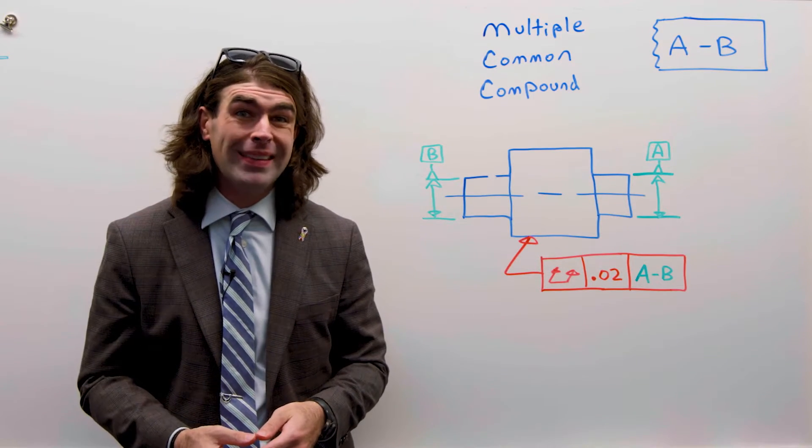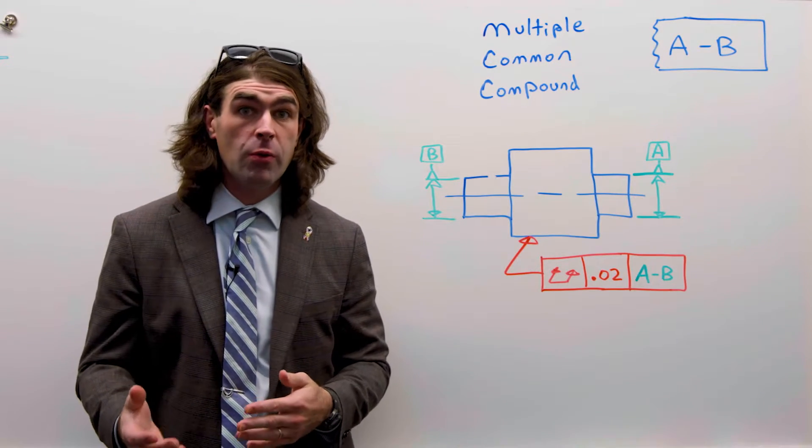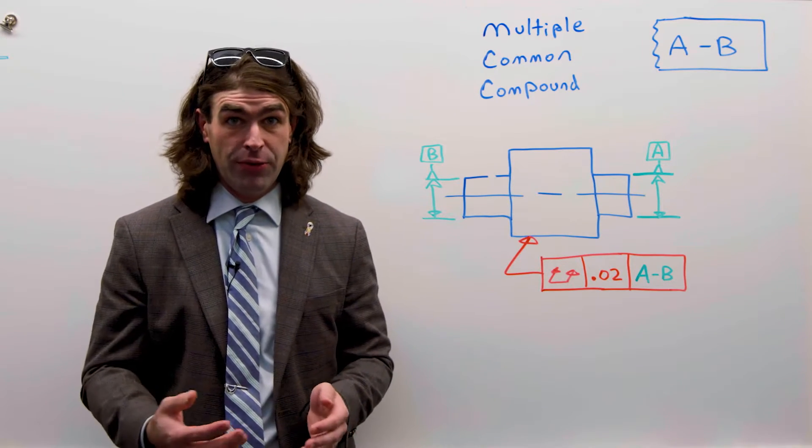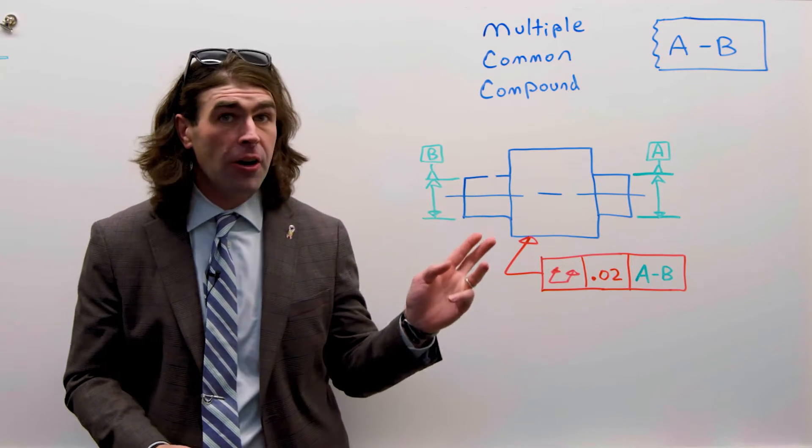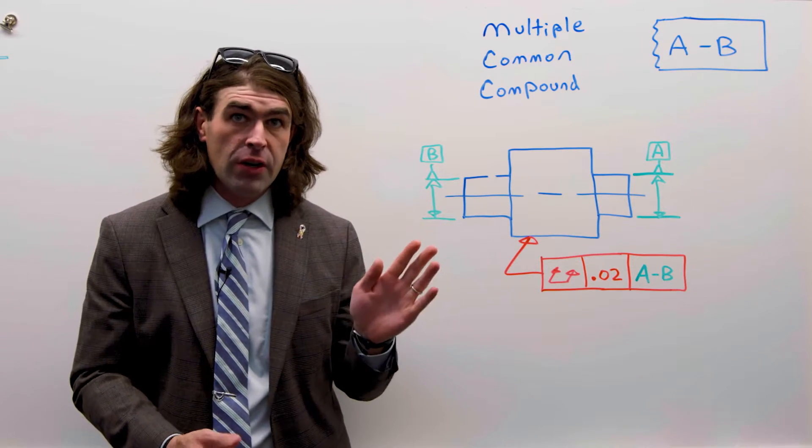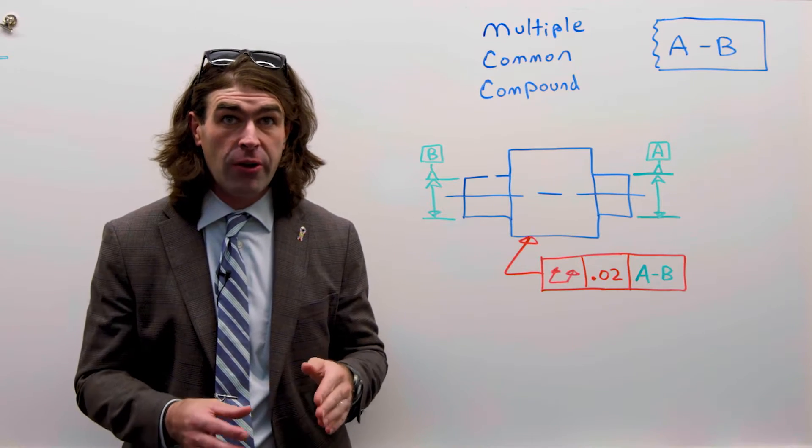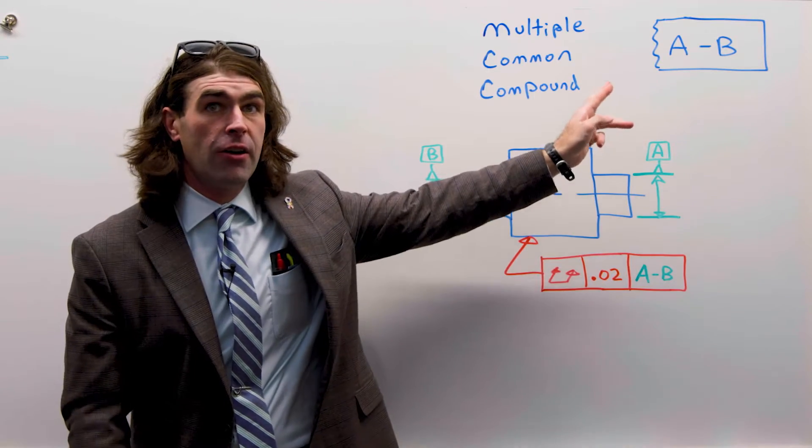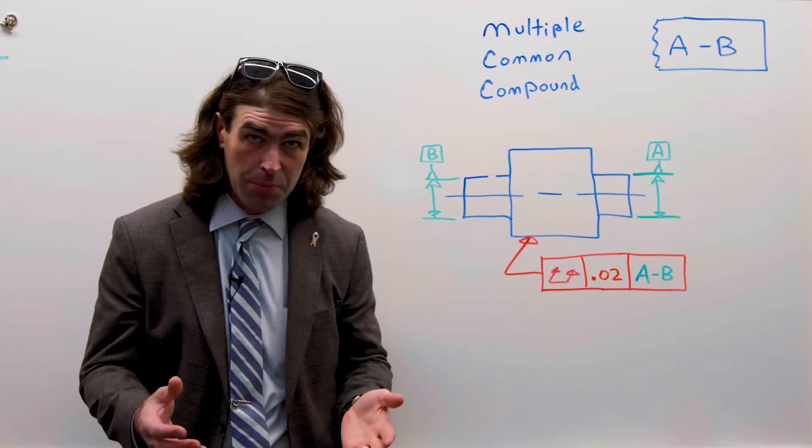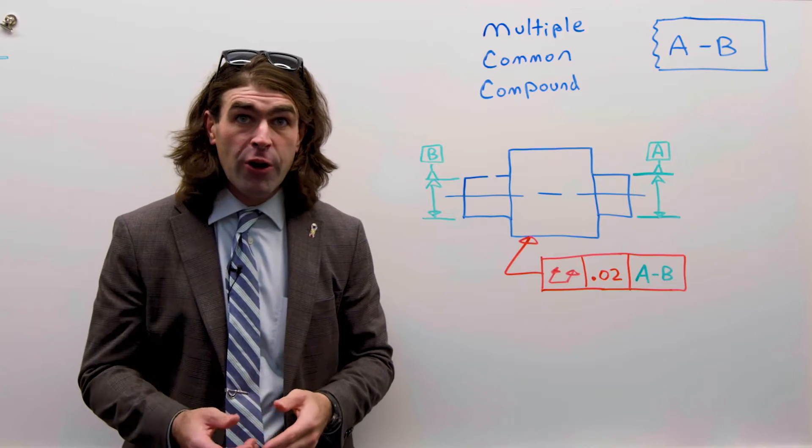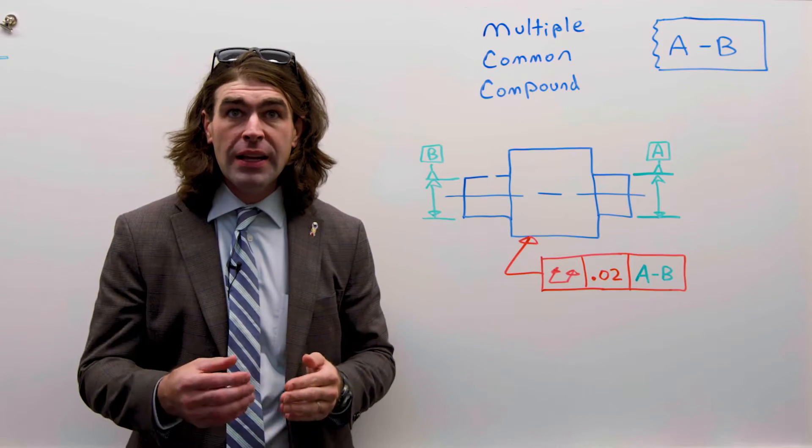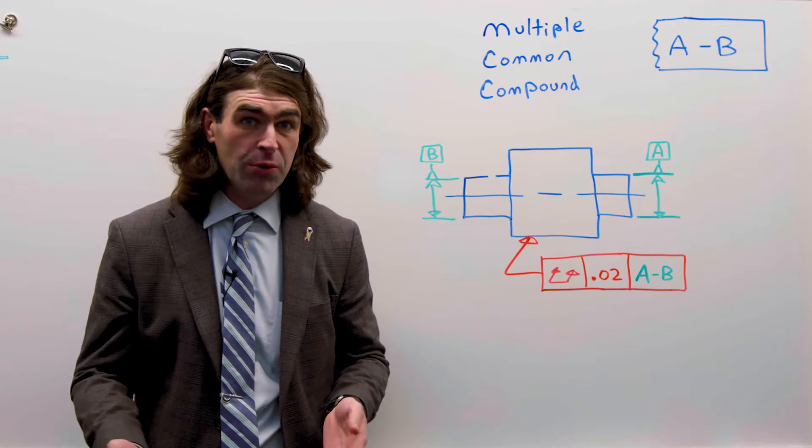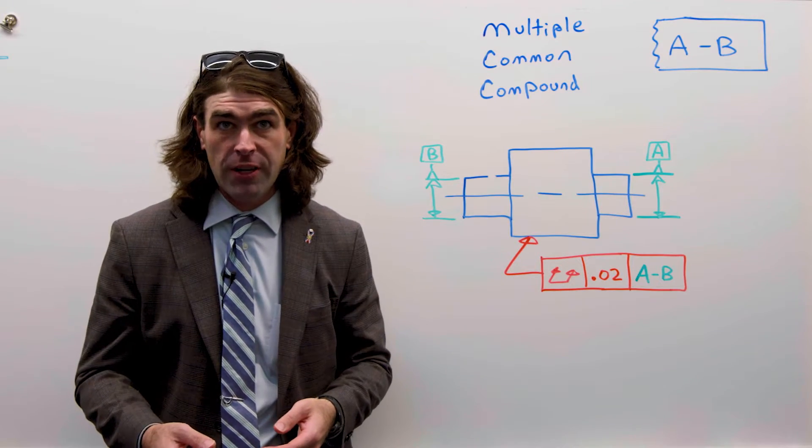In this video I want to talk about the concept of using more than one datum feature simultaneously. This has had different names over the years. Right now in the current ASME 2018 standard it's called a common datum feature. What I mean is when you have a letter hyphen letter in the same compartment. Before in 2009 and 1994 it was called a multiple datum feature, and before that in 1982 it was called a compound datum feature.